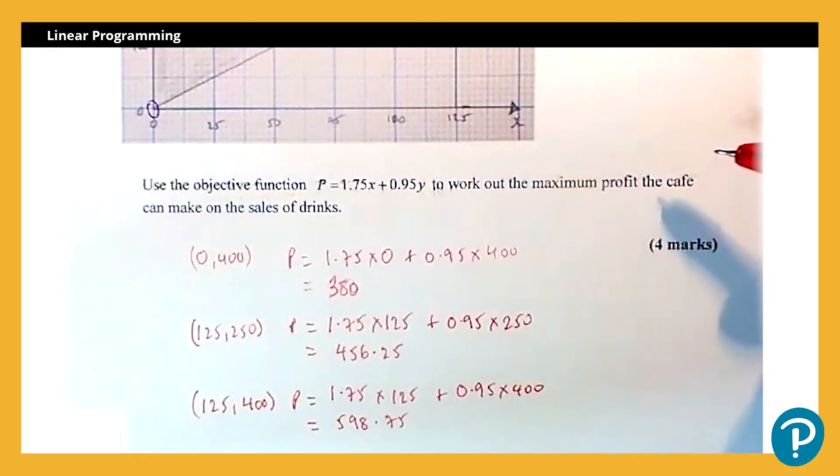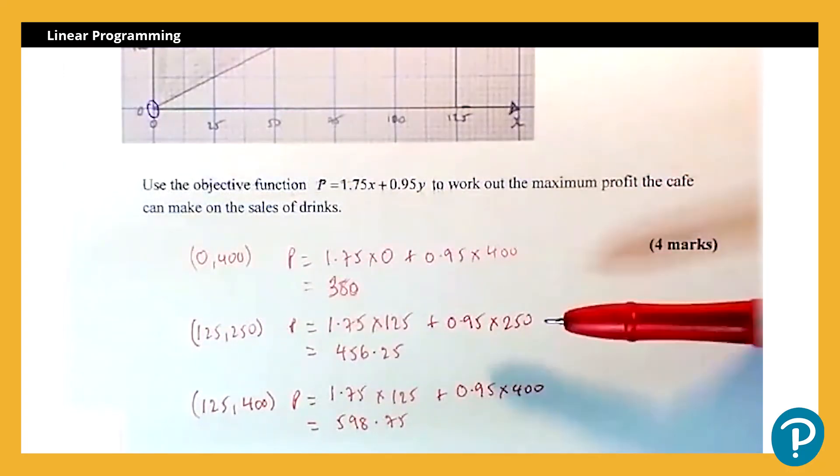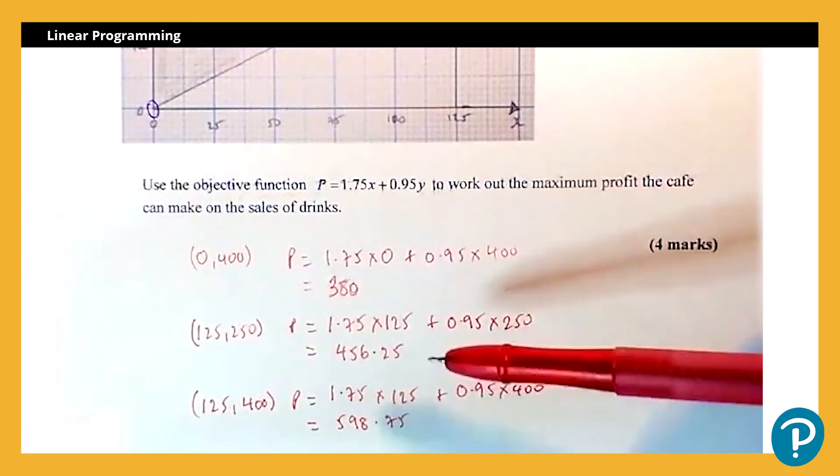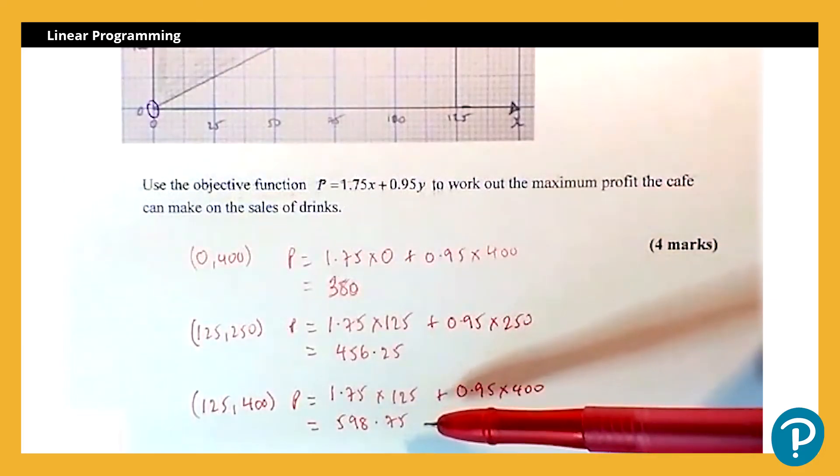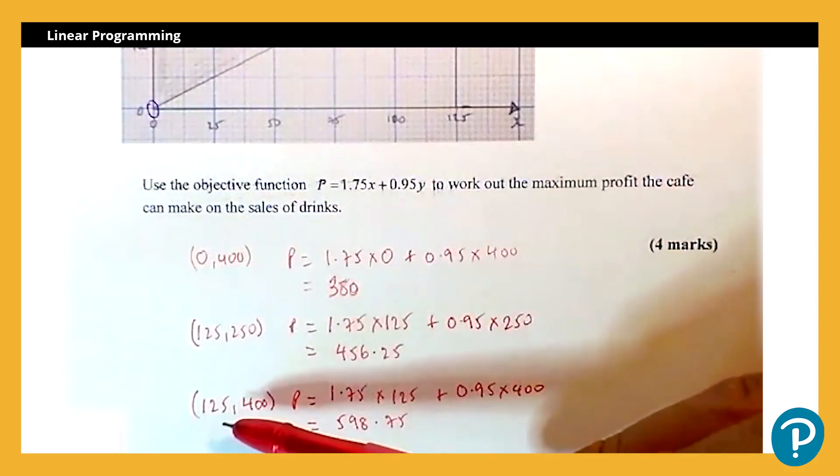So just need to make sure we're looking at the question. Quite often with a question like this it will ask us to state what is the maximum profit and how many of each thing is that involving. So in this case, the maximum profit will be £598.75, and that would be selling 125 hot drinks and 400 cold drinks.